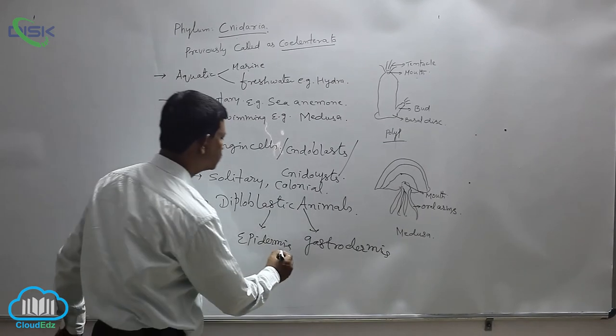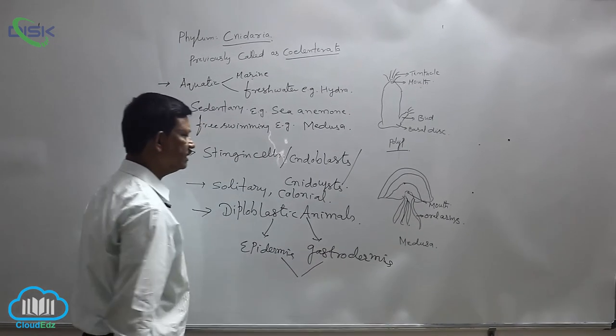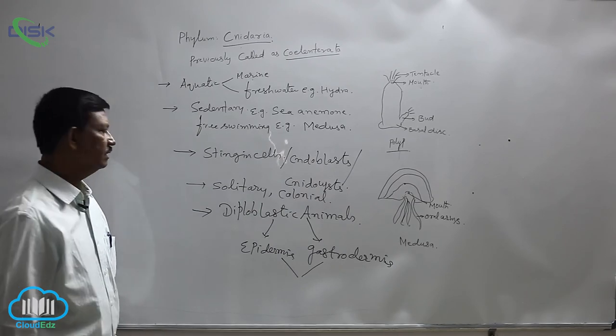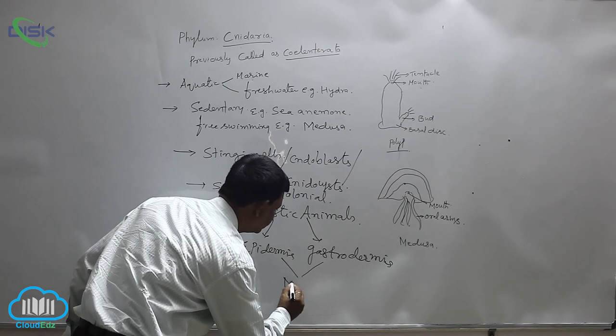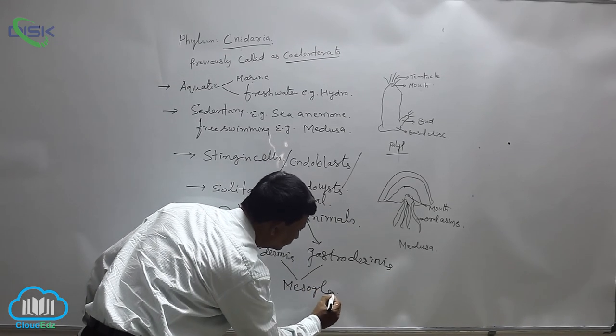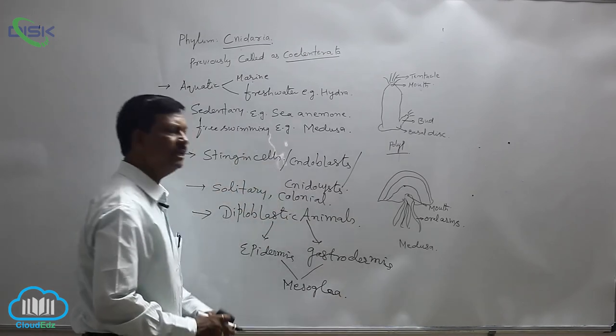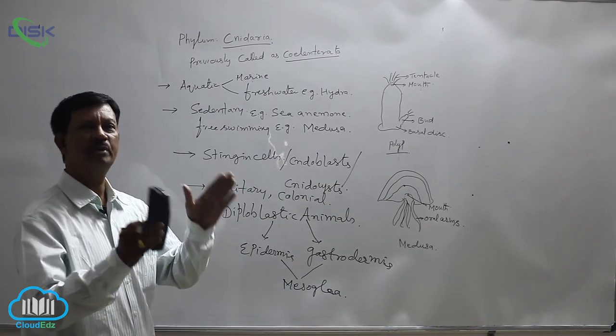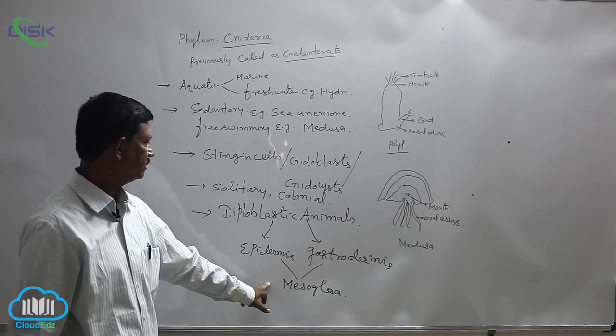In between these two layers, gastrodermis and epidermis, there is a jelly-like substance known as the mesoglea. This mesoglea is a non-cellular gelatinous substance, like cement between two bricks.